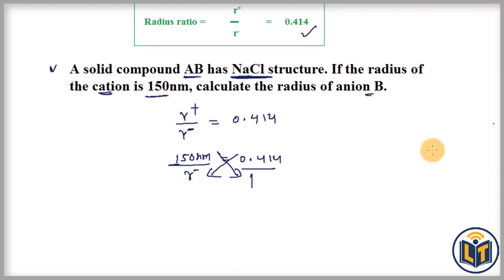Here we get 0.414 times r- (anion) equals 150 nanometers. Now we can transfer this value to the right side. Then the anion value we get is 150 nm divided by 0.414.